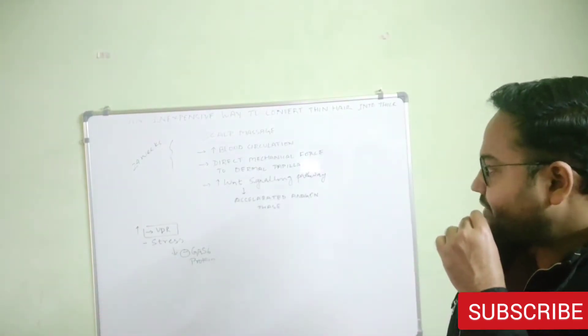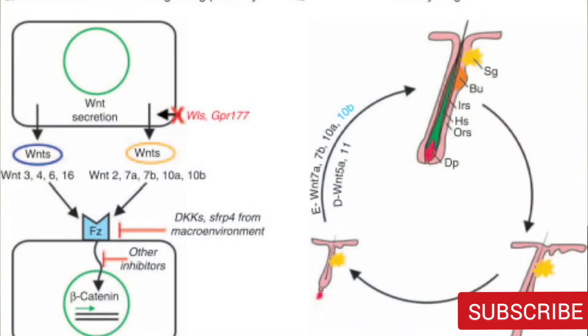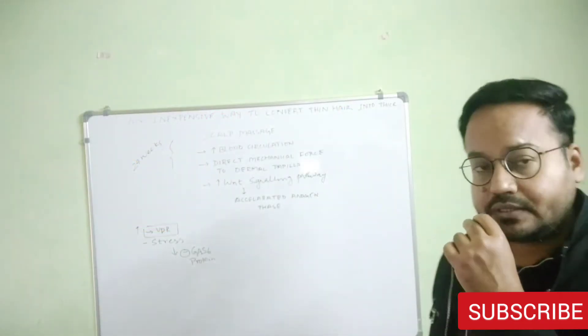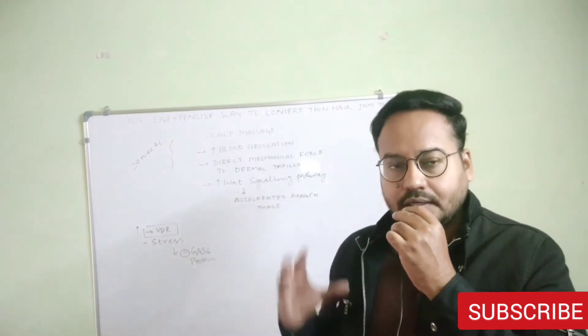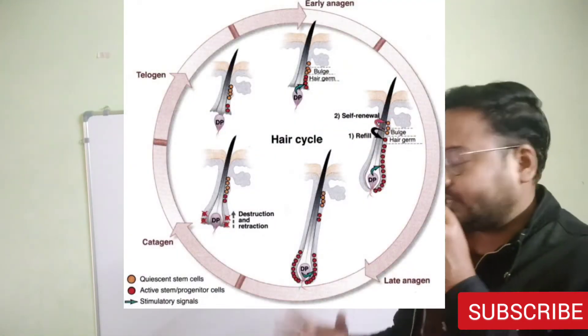There is a pathway called the WNT signaling pathway, and a lot of research has gone into understanding the importance of this pathway and stimulating it in order to control hair fall and convert thin hair into thick hair.